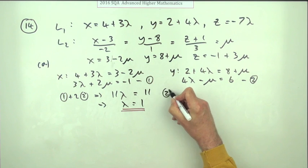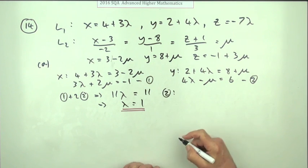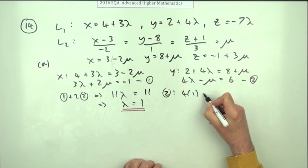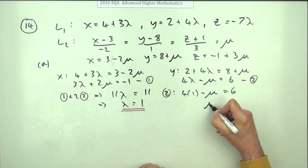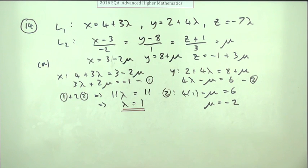Now using number 2 for instance to evaluate that I've got 4 times 1 minus mu is 6. So take away that must be a negative 2. So mu equals negative 2.